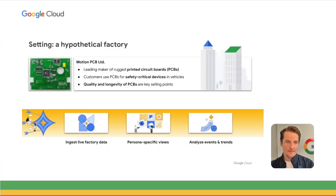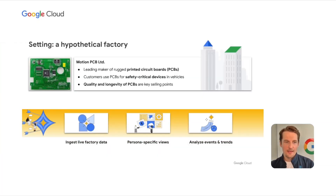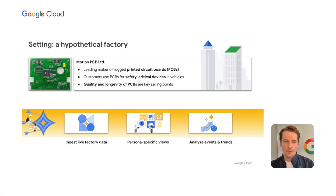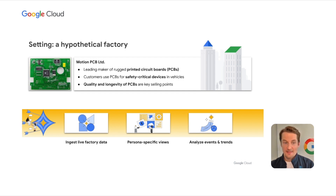The demo scenario is based on a hypothetical company named Motion PCB Limited. This company is a leading manufacturer of rugged, high-reliability printed circuit boards. Motion PCB's customers are mostly automotive suppliers, so quality, longevity, and overall ruggedness of the PCBs are key selling points. Motion PCB decided to embark on a connected factory journey to improve its efficiency, increase quality, and consistency.